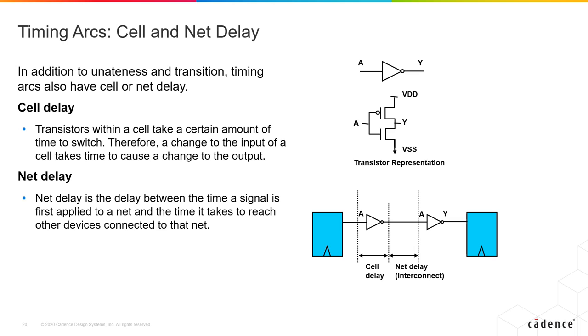Historically, with process technologies above 90 nanometers, cell delay has been the major limiting factor in timing closure. However, at process technologies below 90 nanometers, net delays dominate the cell delays.